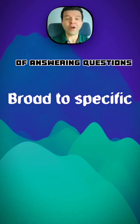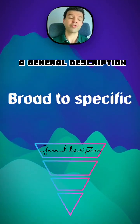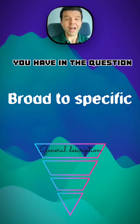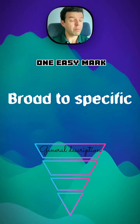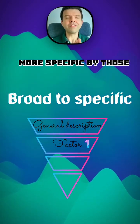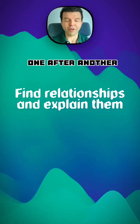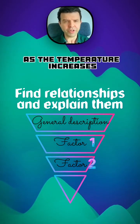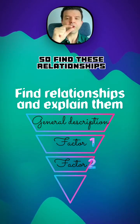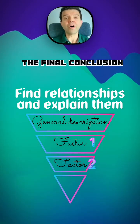One very effective way of answering questions, especially the long ones, is to write a general description that shows the most obvious relationship in the question. This will always score you one easy mark to start your answer, and then you start to go more specific. Find those smaller relationships and try to explain them one after another — for instance, you can say 'as the temperature increases, enzyme activity increases,' and so on, until you get to the final conclusion.